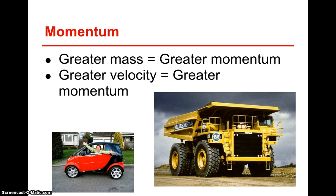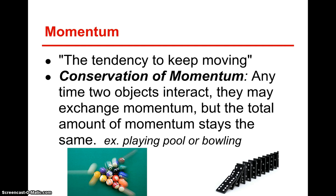A dump truck compared to a smart car — the dump truck is going to have greater momentum because it has greater mass. But if that smart car is going 85 miles per hour, it still has a great deal of momentum because its velocity is very high. So momentum depends on both mass and velocity. It's the tendency to keep moving — it's going to want to keep going until something acts on it, and a lot of times what acts on it is friction. Friction and momentum often work against one another.